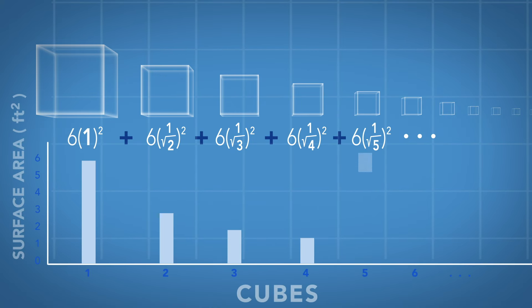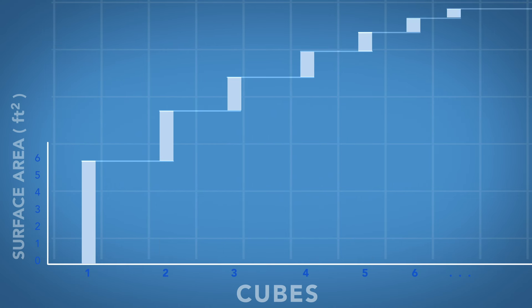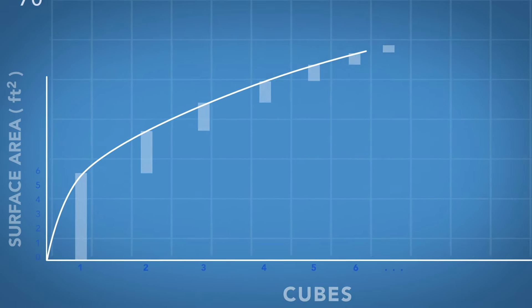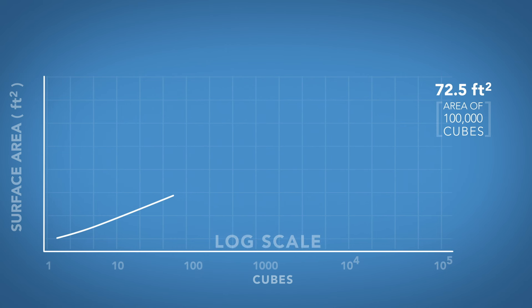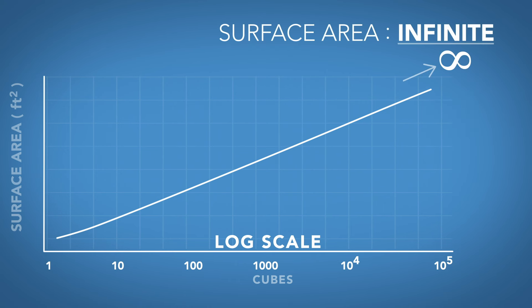Naturally, the surface area of each cube gets smaller as they get smaller. As we add them together, the total surface area approaches infinity. It does this pretty slowly, as at 100,000 cubes we're only at 72.5 feet squared, but when we plot it on a log linear graph, where the x-axis goes up in a log scale, we can clearly see the trend is up. This isn't too surprising. It's kind of what we'd expect from infinitely many cubes.